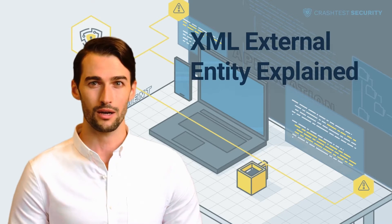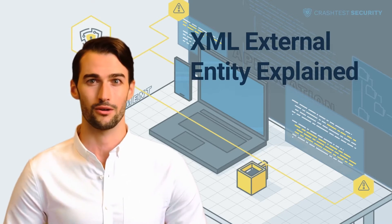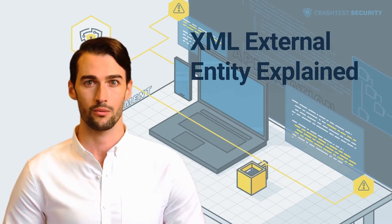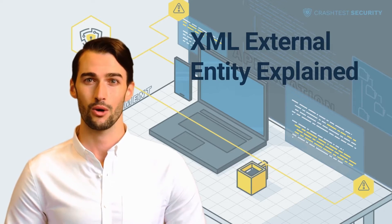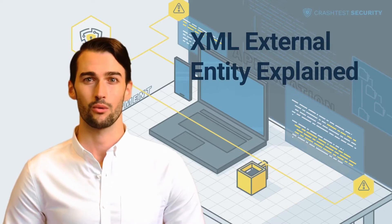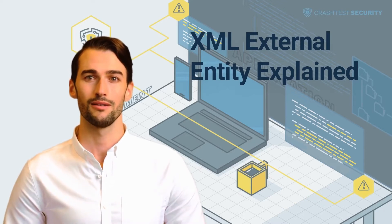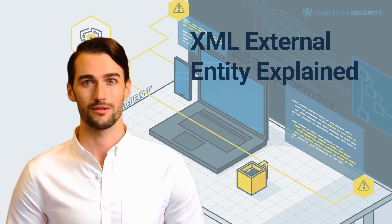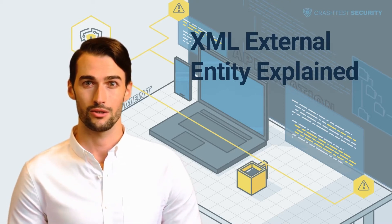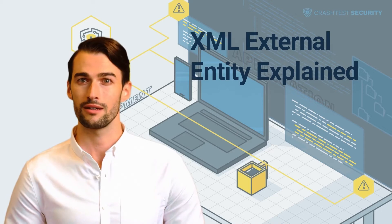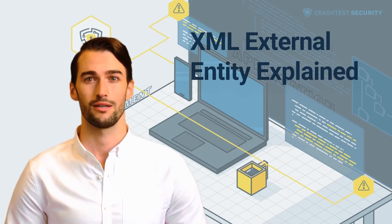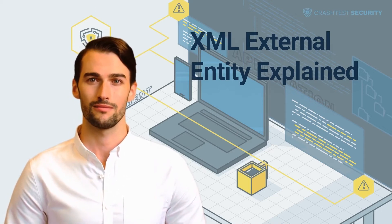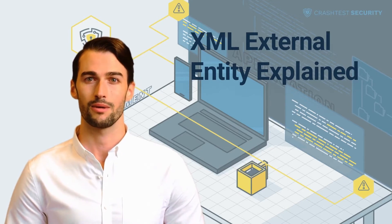The OWASP Top 10 is an awareness document that focuses on the 10 most critical risks for web application security. The paper is freely available, and OWASP recommends that organizations adopt the outlined best practices into their application workflows for improved web application security. Out of the list of security risks, XML External Entity vulnerability is one such OWASP security risk that focuses on parsed XML input using misconfigured processors.